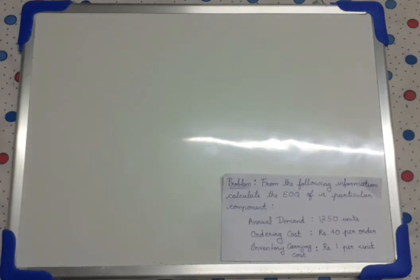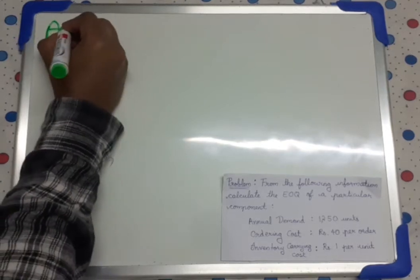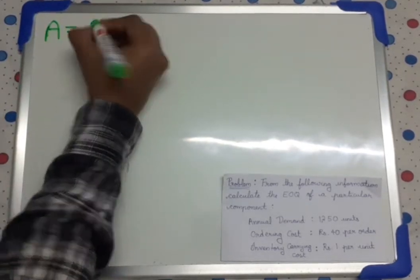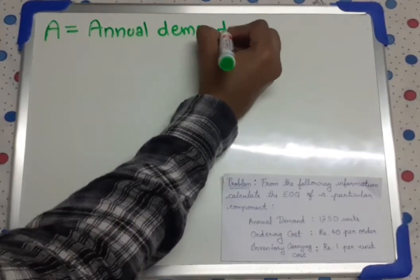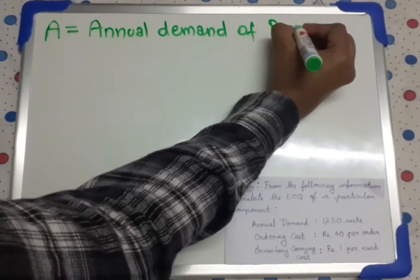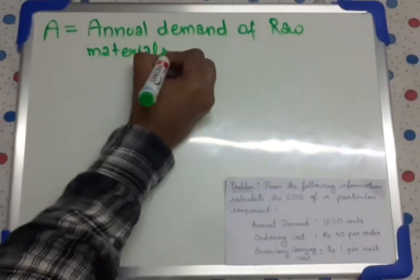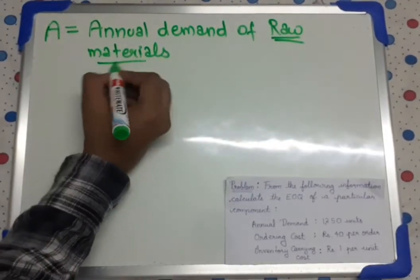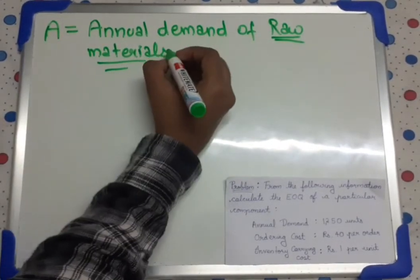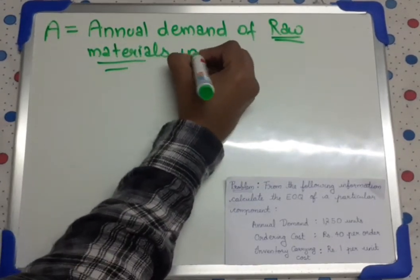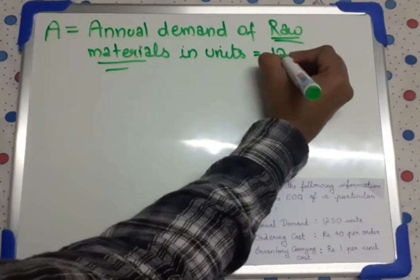It is a very easy problem. So what is the information given? Annual demand is given. So annual demand A — it is annual demand of raw materials. We should always remember it is annual demand of raw materials, because at times instead of raw materials they may give us other information such as finished goods, and if we substitute that information here our answer will go wrong. So A is annual demand of raw materials in units, and here the value is 1250 units.